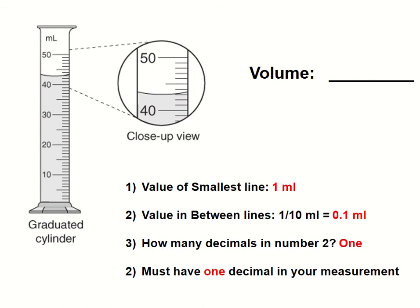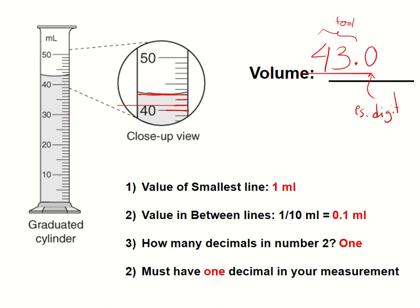Now think about another graduated cylinder example. Between 30 and 40 each line has 1 mL, so counting: 40, 41, 42, 43 — the meniscus is touching 43. I could measure 43 by the tool. Now I have to add my estimation. Since it's exactly on the line, I say 43.0. The last digit zero is the estimated digit.